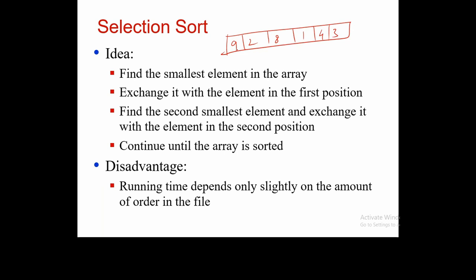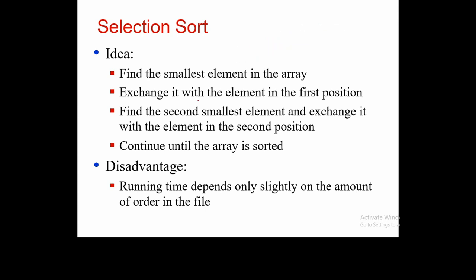We find the minimum element — which is 1 — and swap it with the element at the first position. So 1 comes to the front and 9 goes to where 1 was. Now the remaining list is 2, 8, 9, 4, 3. Again we find the smallest element and place it at the second position, then the third smallest at the third position, and so on until the list is sorted.